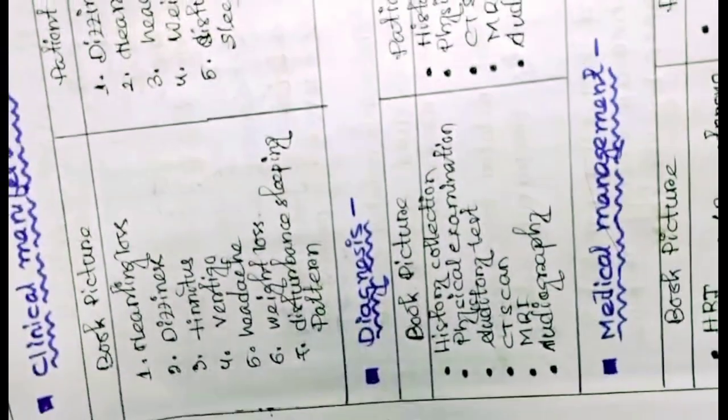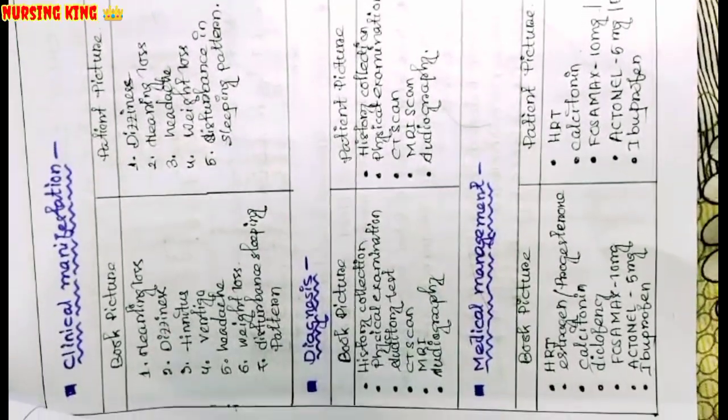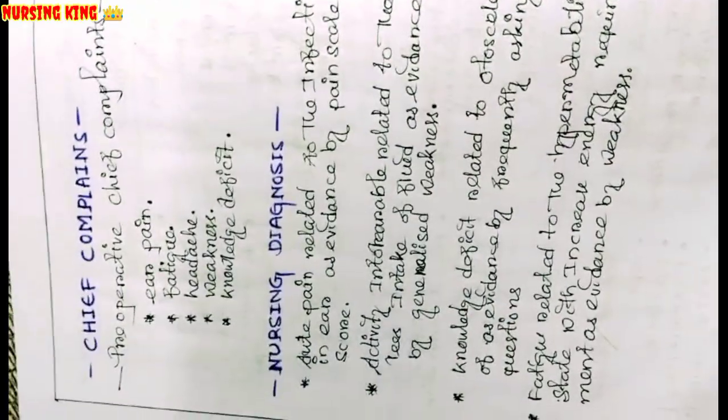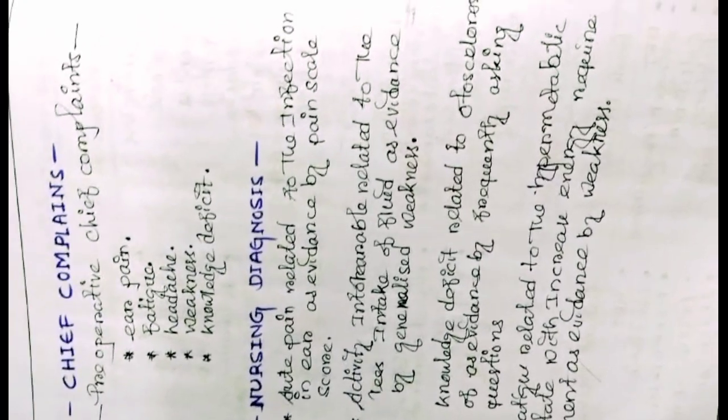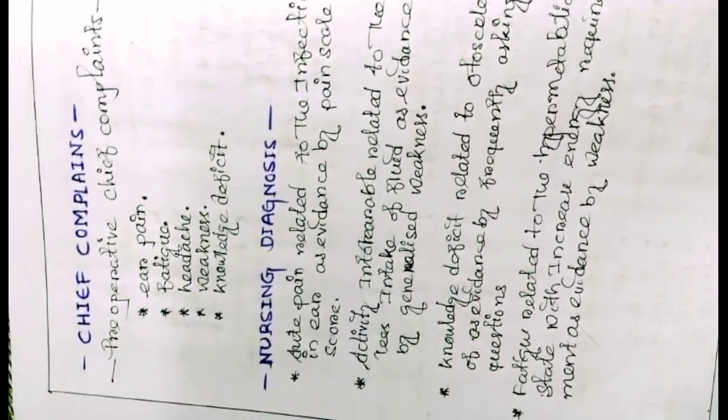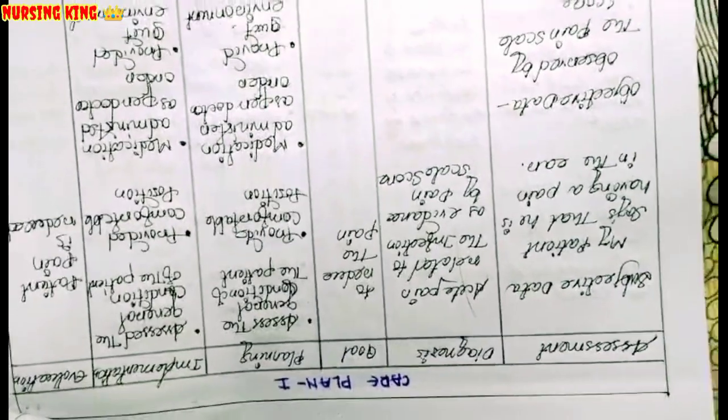Then symptoms, clinical manifestation, diagnosis, medical management - everything you have to write. Book picture and patient picture means what are the chief complaints in the textbook for the disease and what are the complaints the patient has. You have to write that separately.